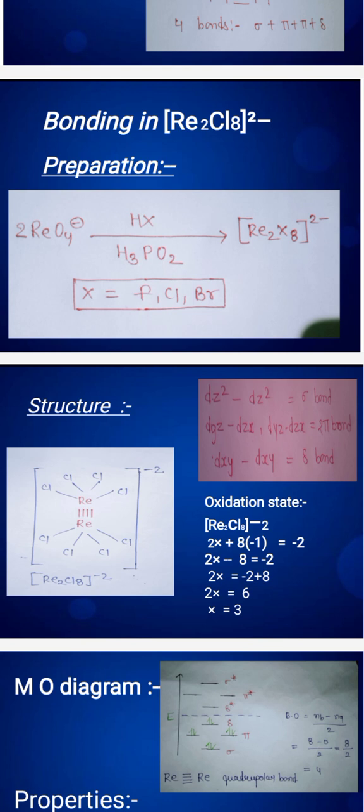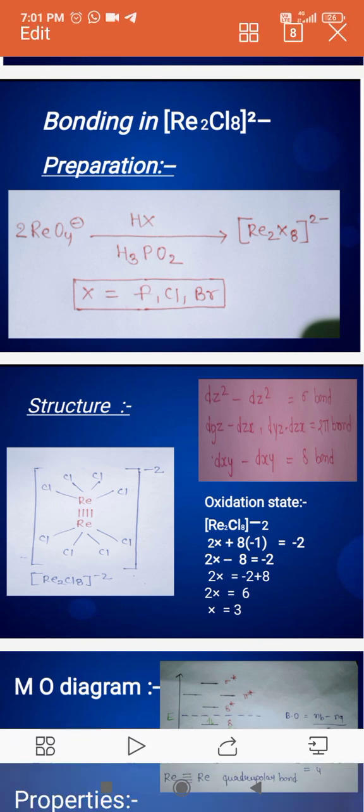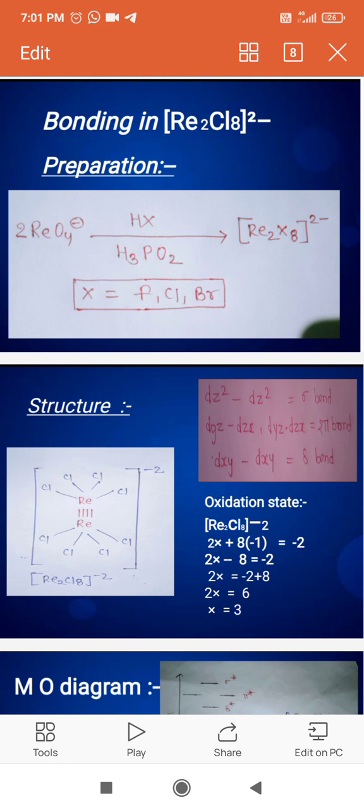You can see the degenerate d orbitals: dxy, dyz, dzx, dx²-y², and dz². The two rhenium atoms overlap to form two pi bonds, and lastly, dxy and dxy do sideways overlapping to form the delta bond. This is how our quadrupolar bond forms.